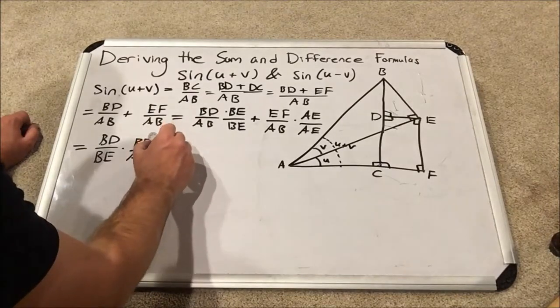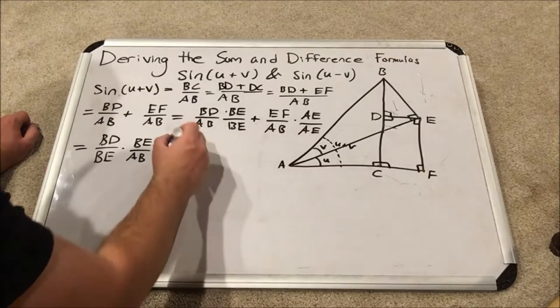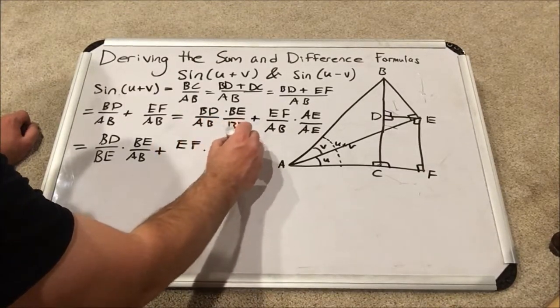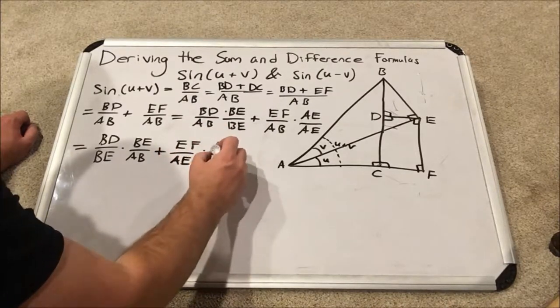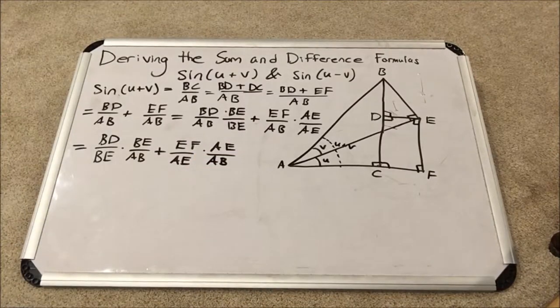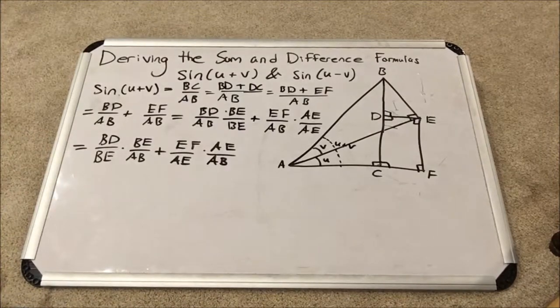And I'm going to do the same thing for the other set of fractions. I'm going to reorder those denominators. So I have EF times AE over AE and then over AB.